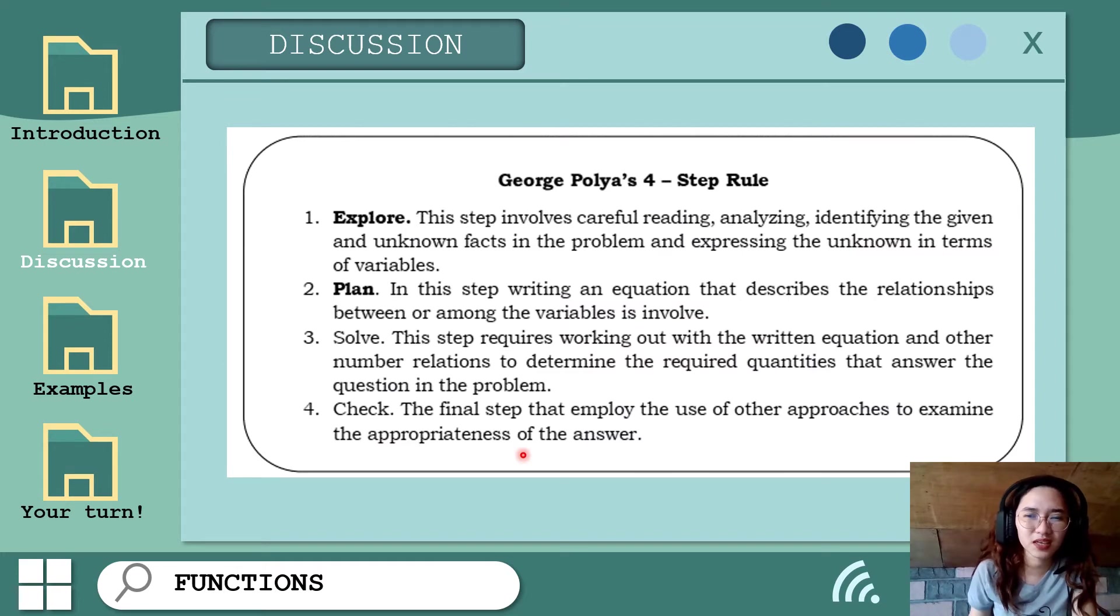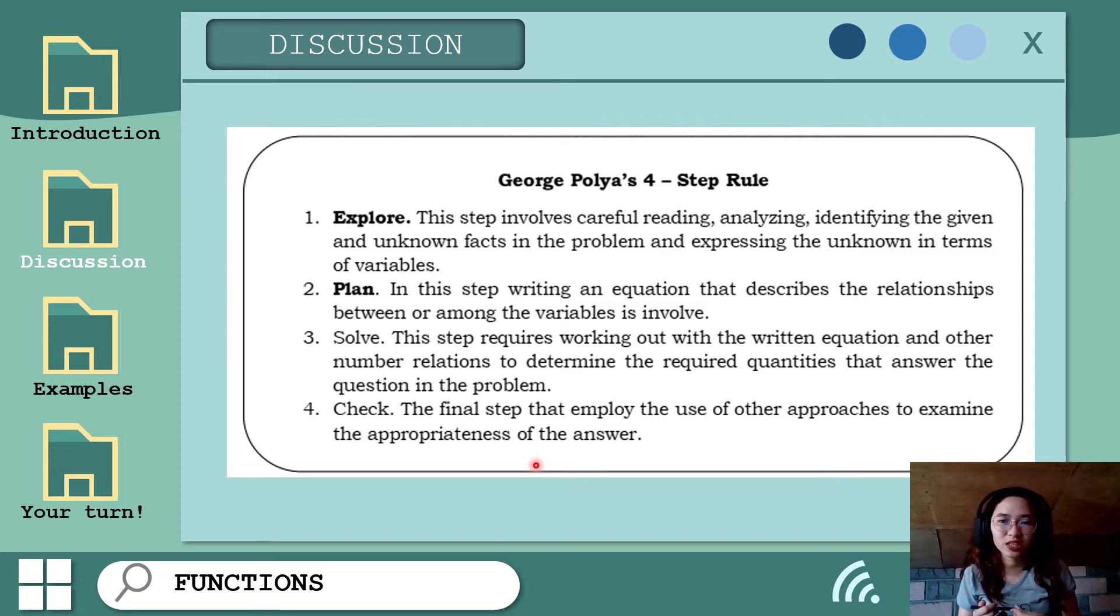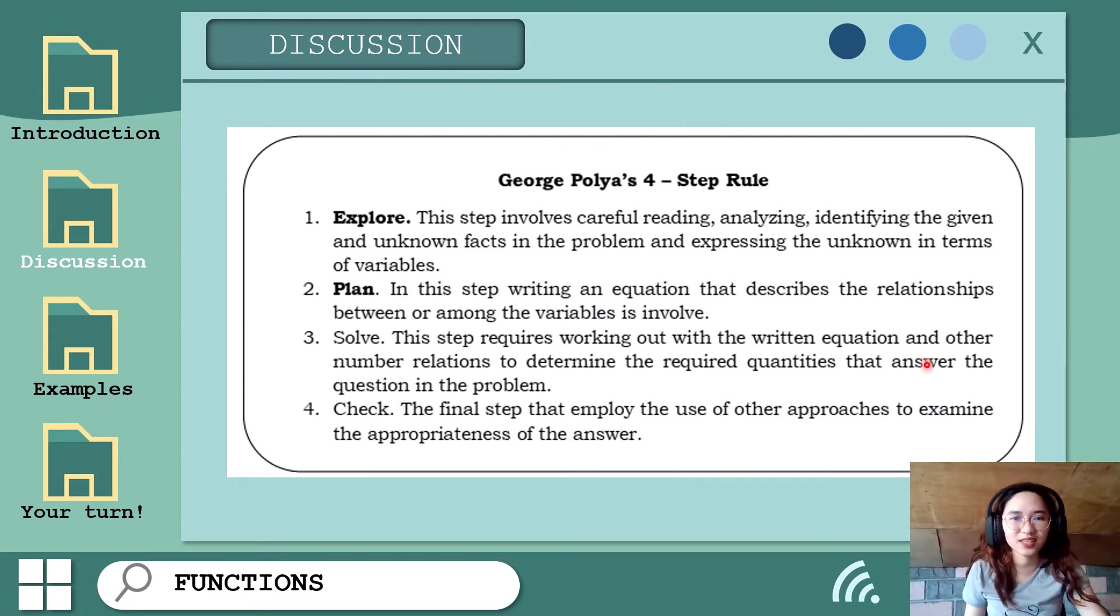Then next is to check. The final step, sometimes not everyone does this. Most of the time, you just wait for the teacher to give back your paper to see where you made mistakes. In modular learning, you can check using the answer key. But without looking at the answer key, you can check yourself if your solution is correct. The final step involves the use of other approaches to examine the appropriateness of the answer. Let's try to apply these steps in solving real-life problems involving functions.